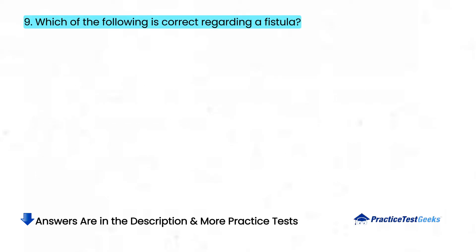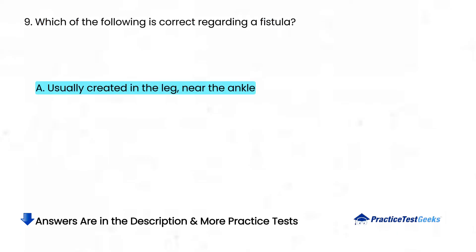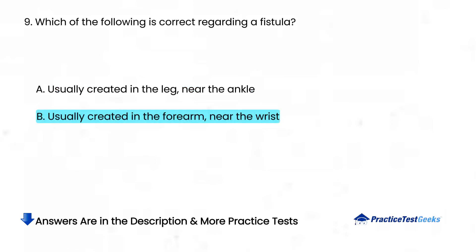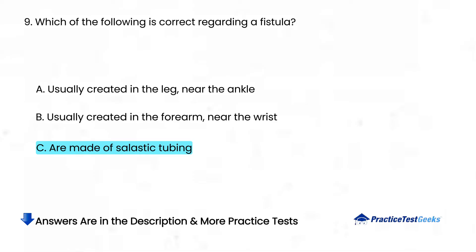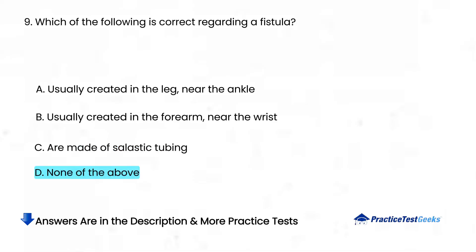Which of the following is correct regarding a fistula? A. Usually created in the leg, near the ankle. B. Usually created in the forearm, near the wrist. C. Are made of silastic tubing. D. None of the above.